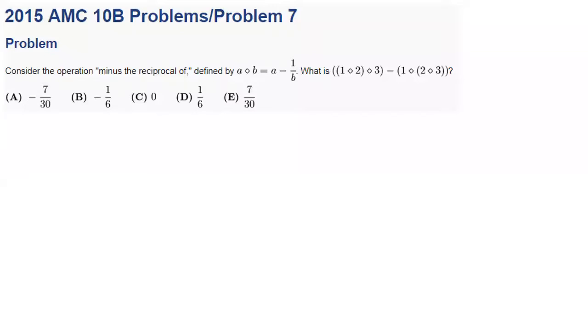Today we'll be taking a look at the 2015 AMC-10B problem number 7. Consider the operation 'minus the reciprocal of,' defined by A◇B = A - 1/B. What is (1◇2)◇3 minus 1◇(2◇3)?